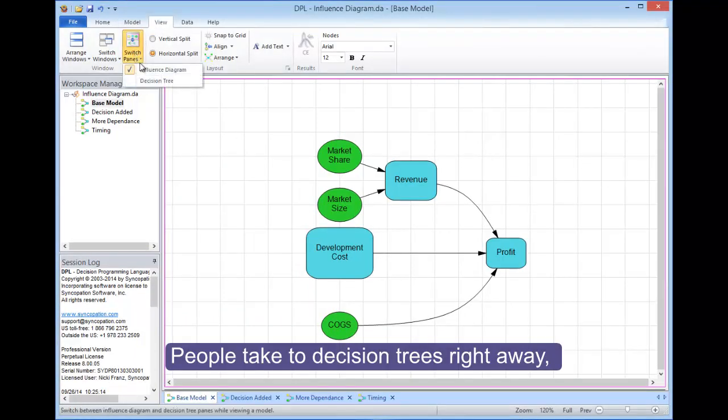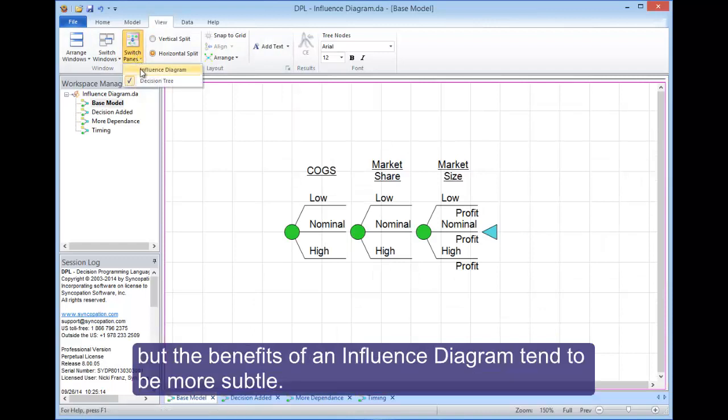People take to decision trees right away, but the benefits of an influence diagram tend to be more subtle.